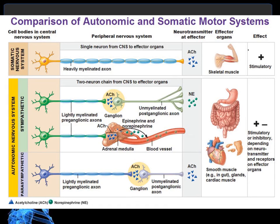The last type is parasympathetic. Because the ganglion is near the effector organ, it has a long preganglionic neuron and a short postganglionic neuron. The neurotransmitter is acetylcholine. The organs it affects include the digestive and reproductive organs. For organs like the heart and lungs, it has a decreased inhibitory function — meaning it slows them down.